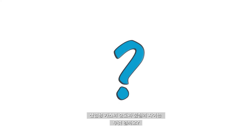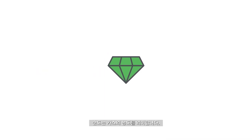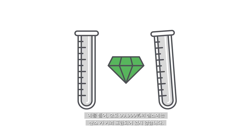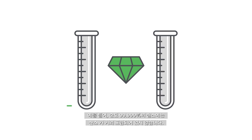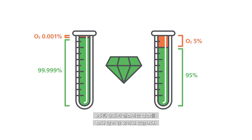What is the difference between industrial gas purity and quality? Purity refers to the concentration of a gas. For example, nitrogen with a purity of 99.999% contains hardly any oxygen, while a purity of 95% holds significantly more O2.